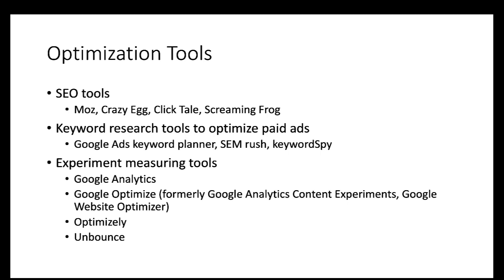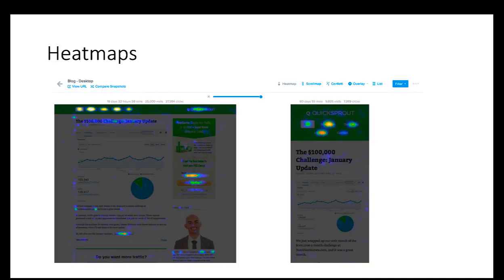There are many optimization tools. Popular SEO tools include Mouseflow (formerly SEO Mouse), Crazy Egg, ClickTale, and Screaming Frog — most of them have very interesting names as a marketing strategy to attract business. Keyword research tools include Google Ads Keyword Planner, which you can use for free with a Google account, as well as SpyFu and KeywordSpy — they all let you see what keywords your competitors are using, how cost-effective they are, and how many searches and clicks they generate. Measuring tools for experiments include Google Analytics and Google Optimize; Optimizely is a popular alternative.